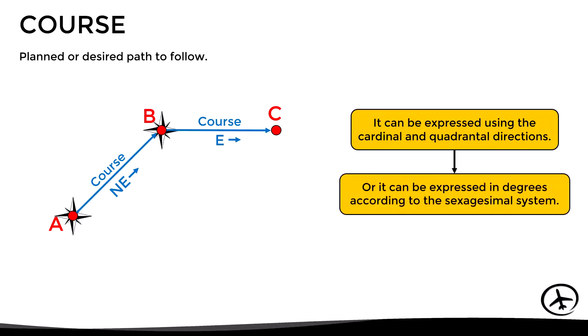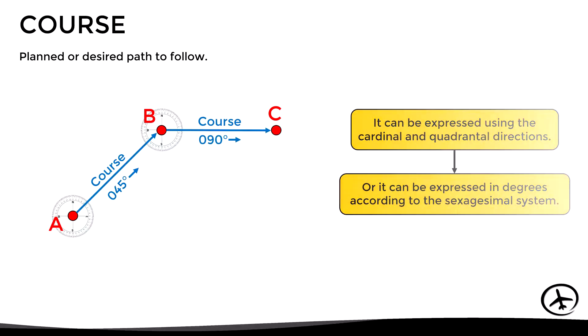However, the course can also be expressed in degrees according to the sexagesimal system. In that case, the course from A to B would be 045 degrees and the course from B to C would be 090 degrees. This course is measured in relation to the direction to the north pole, also known as the geographic north pole or true north.